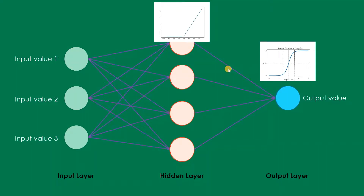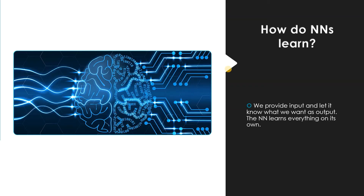Now let us talk about how neural networks actually learn — what these weights are. In deep learning there are fundamentally two programming approaches: one is hard-coding everything so you know what is happening at each step, and the other is the neural network approach. In neural networks we know the input and we know the desired output, and we tell the network what output to predict. Based on the input and output it will learn everything on its own. We don't know exactly what is happening between input and output — that is why it is abstract.